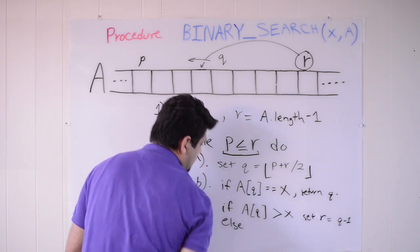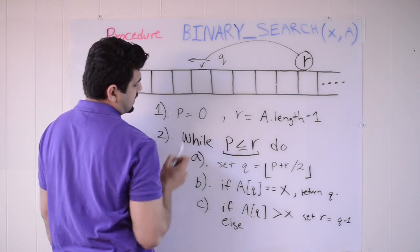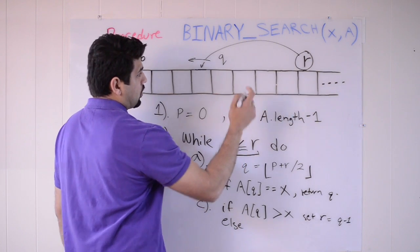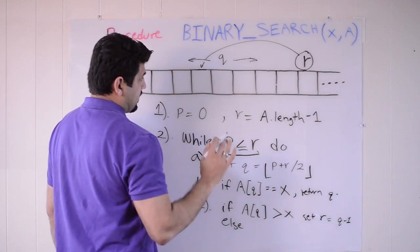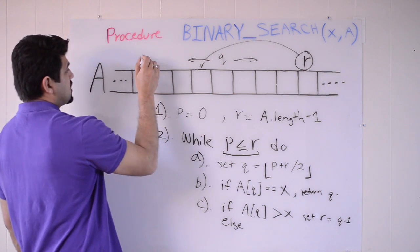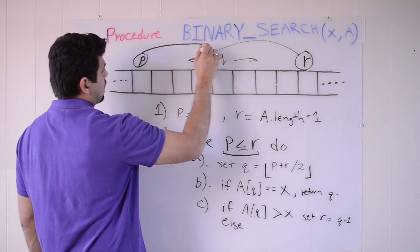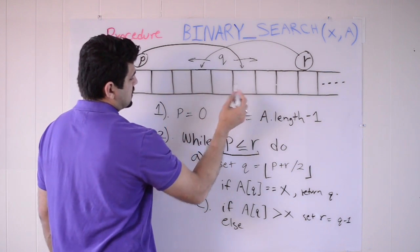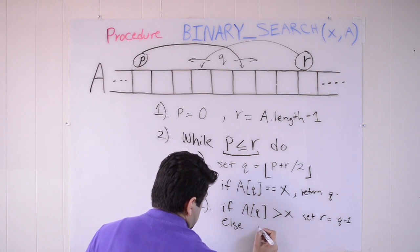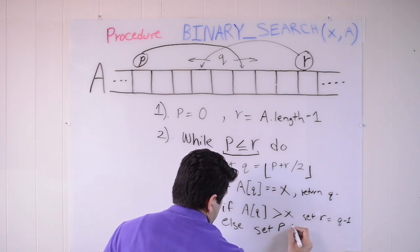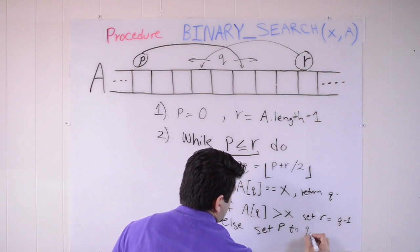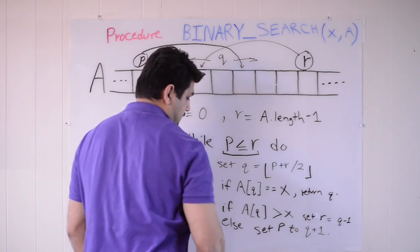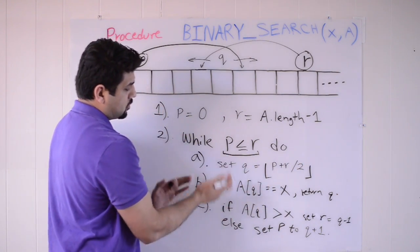Else, in the case that the value here is not greater than x, then the opposite is true. Then we know that the data that we're looking for must be in that direction. And in that case, we leave r where it is. We change the value of p. And we bring p over in front of r. We make p point to this slot position. So we can say else set p to q plus 1.